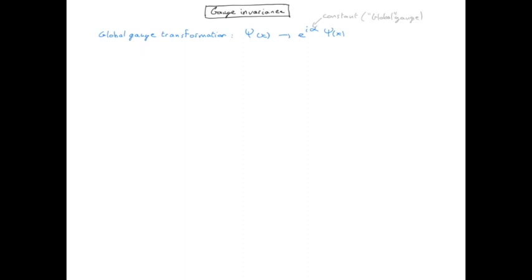The Dirac Lagrangian depends both on Psi and Psi bar, therefore we need to specify how the global gauge transformation acts on Psi bar as well.